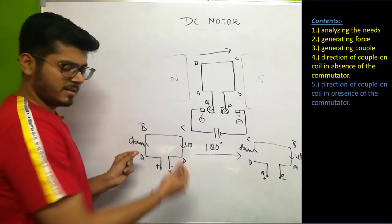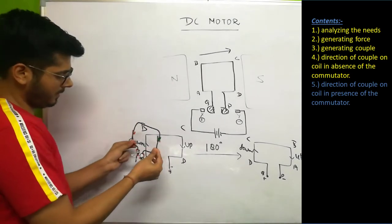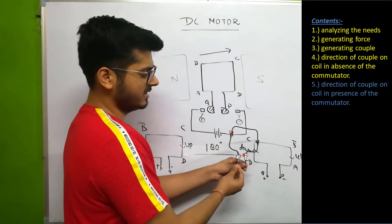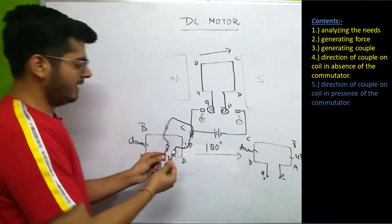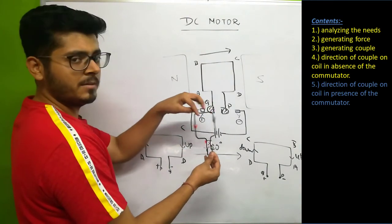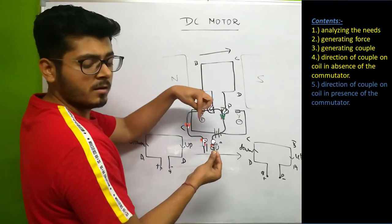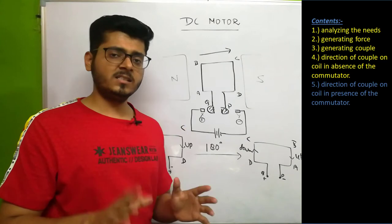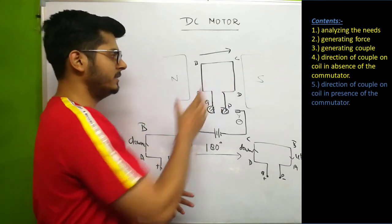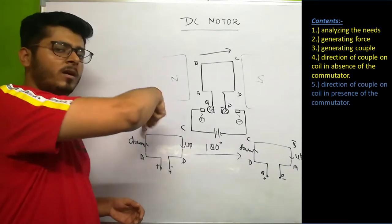So what happens? In the first case, the coil is trying to rotate in this direction. In the second case also, the coil is trying to rotate in the same direction. The direction of rotation of the coil is not going to change because the couple is acting in the same direction. That is how the coil will complete all its rotations, and we have successfully maintained one direction of couple acting on this current-carrying coil.